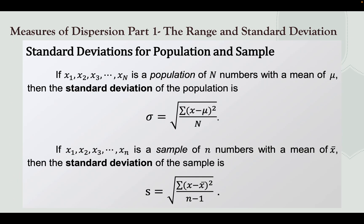There are ways to solve the Standard Deviation. Let us first identify whether our given data is a population or a sample. If we have x₁, x₂, x₃ until xₙ as a population of n numbers with mean μ,